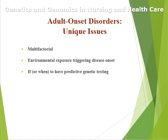The adult-onset disorders are multifactorial. There's an environmental exposure triggering the disease onset. Individuals can have the genotype for a disorder but may never express the phenotype. The environment carries many factors that can further alter a person's DNA, including the chromatin and the nucleosome to affect transcription, and ultimately the protein necessary for healthy function of cells and tissue.